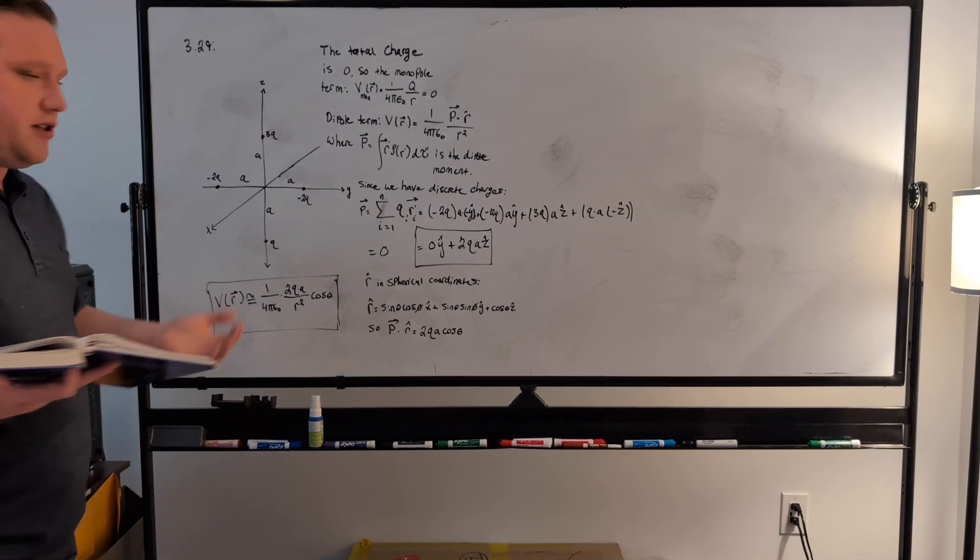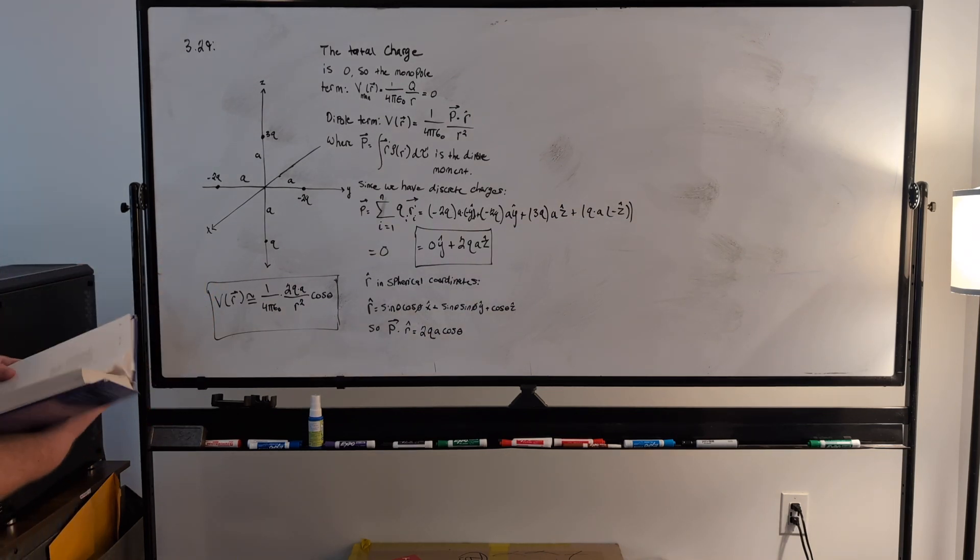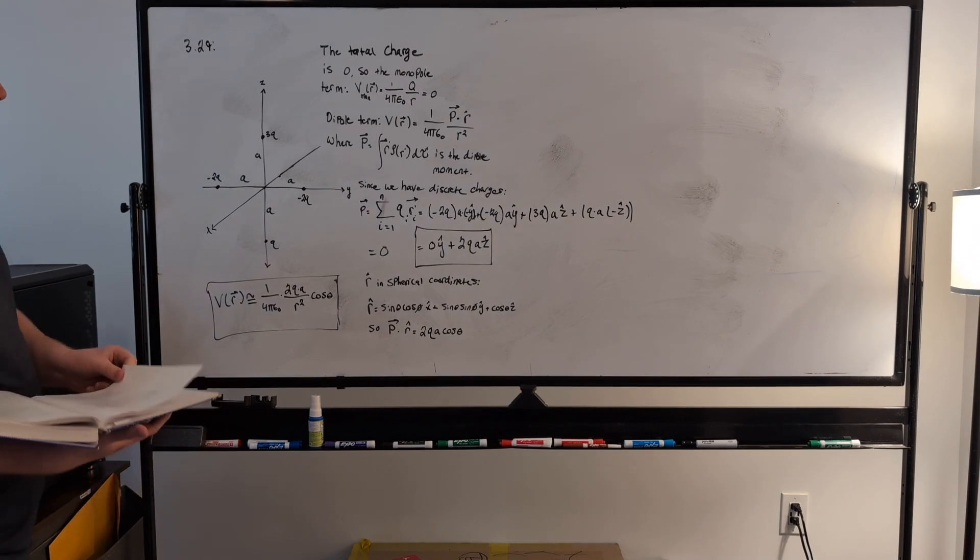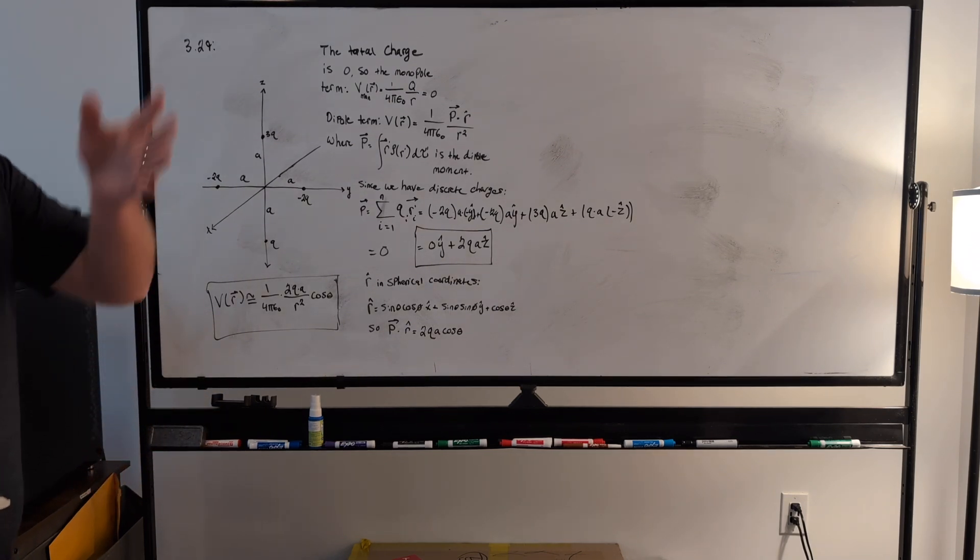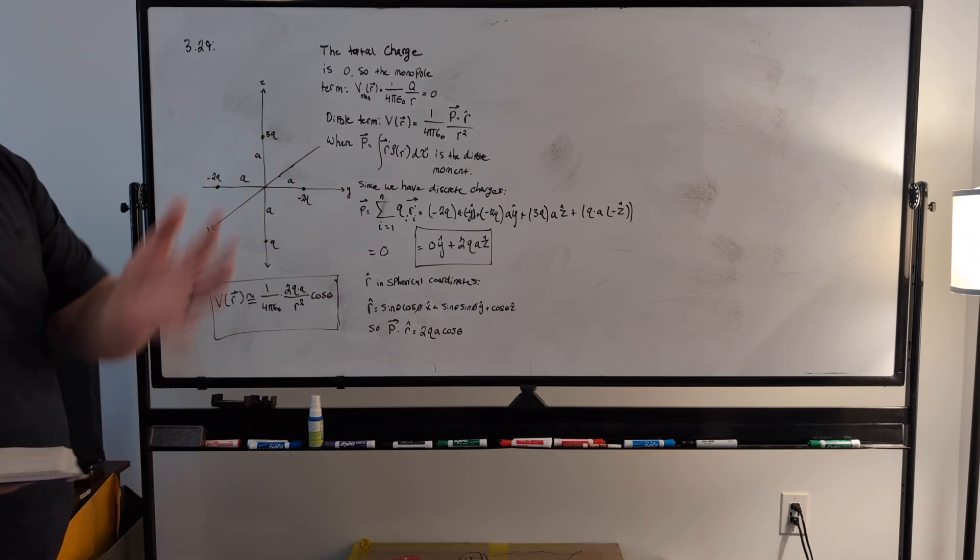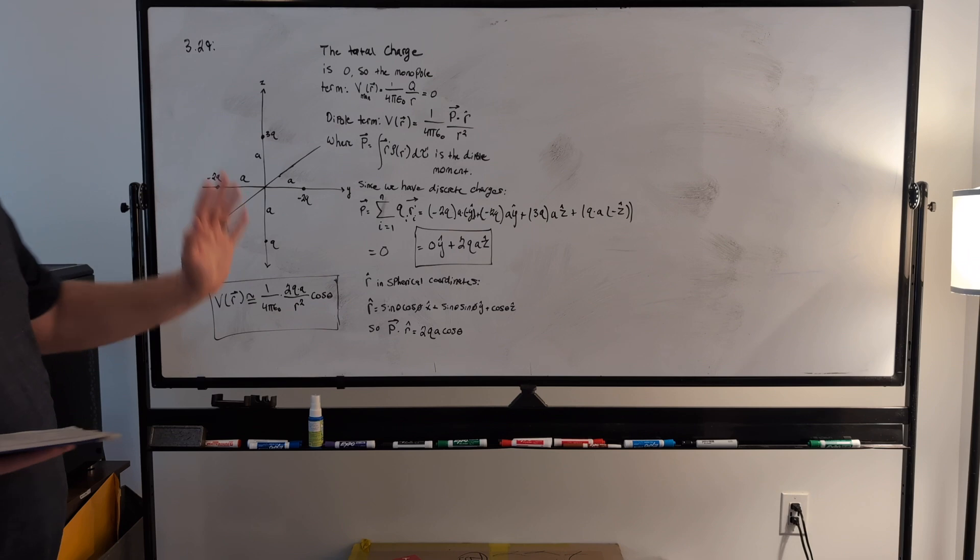This is all still dealing with the multipole expansion. If you look at the multipole expansion and expand it out, you have your monopole term, your dipole term, then your quadrupole term, octopole term, everything like that.